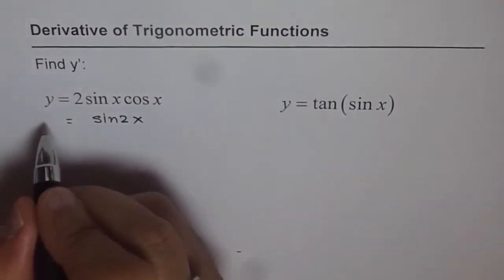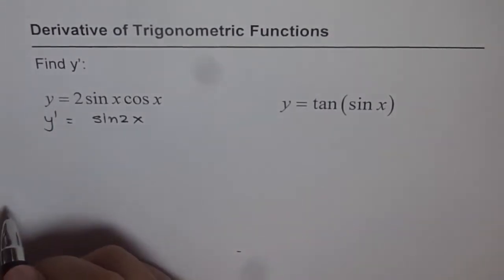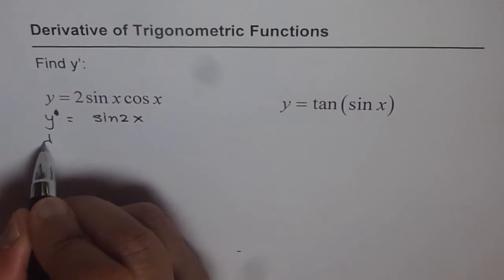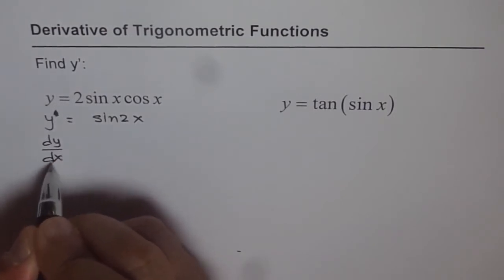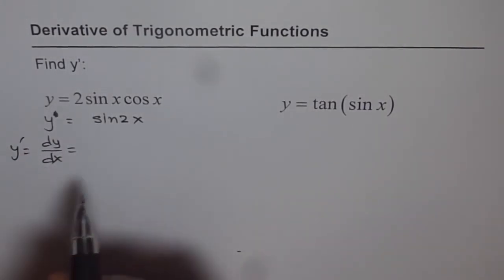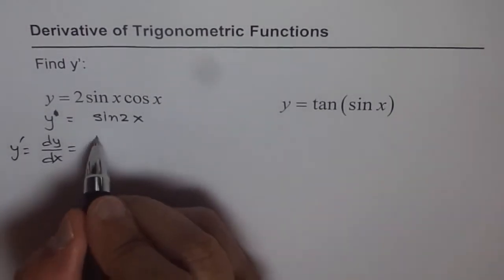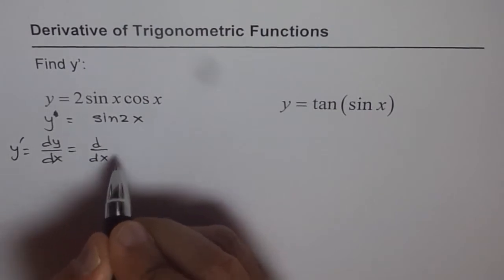And then find y dash. So this is y, I mean this is y for me and now find y dash. Y dash basically means dy dx. That means we are trying to differentiate with respect to x on both the sides. So when you differentiate this function with respect to x, what do you get?